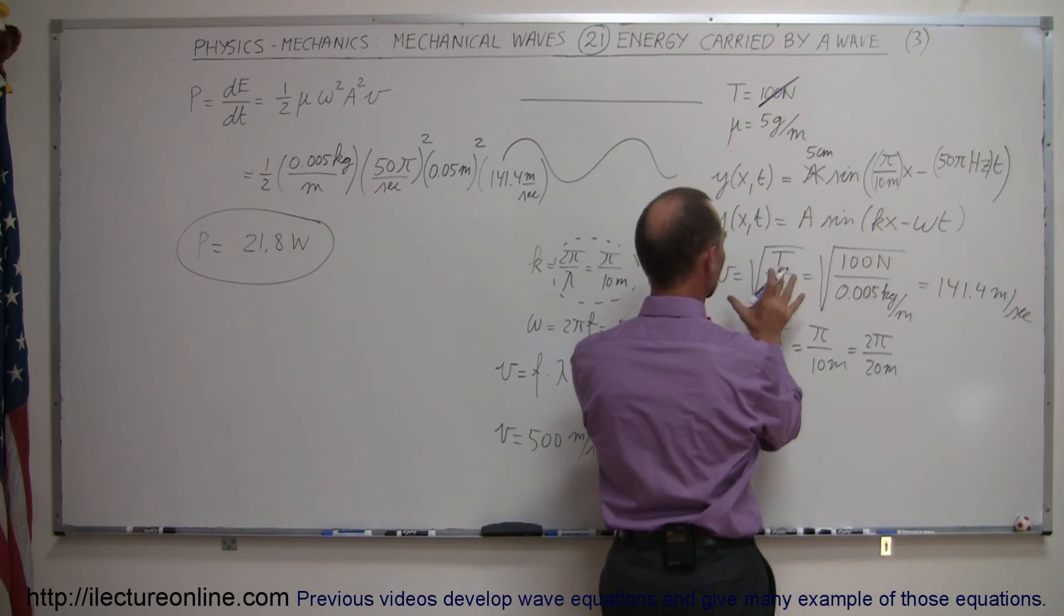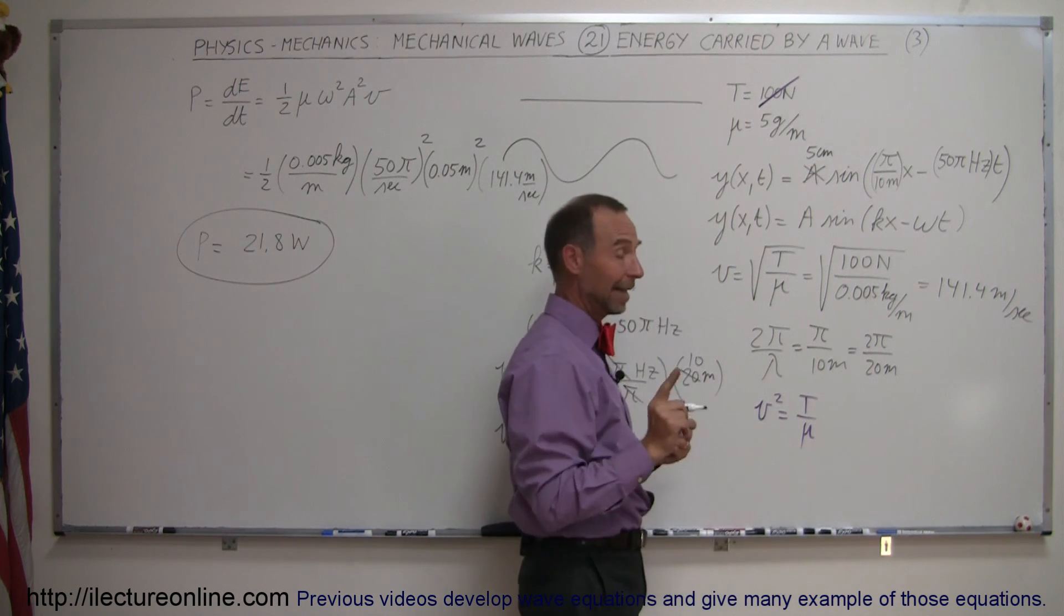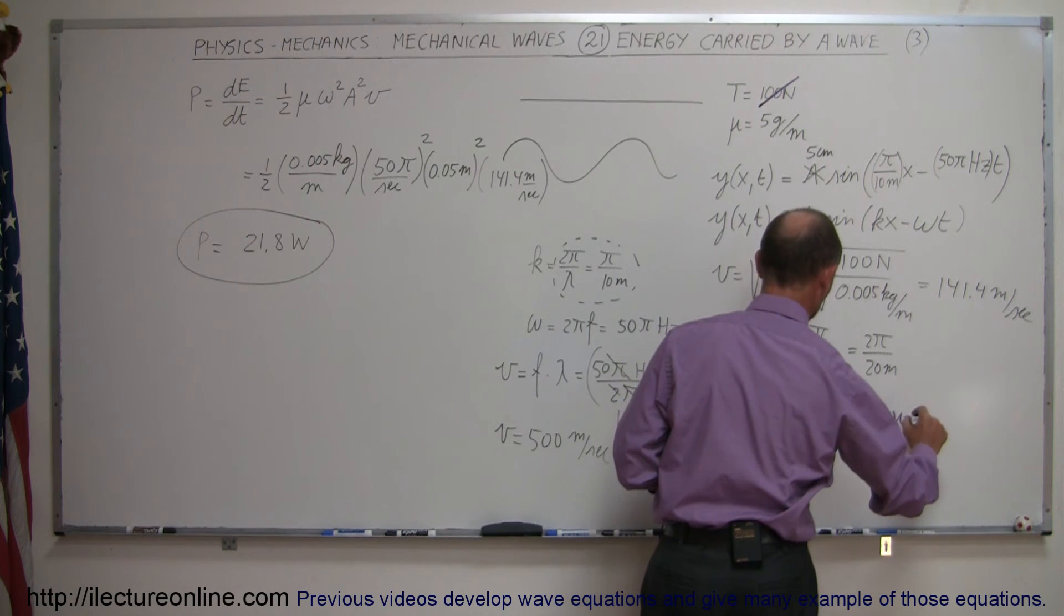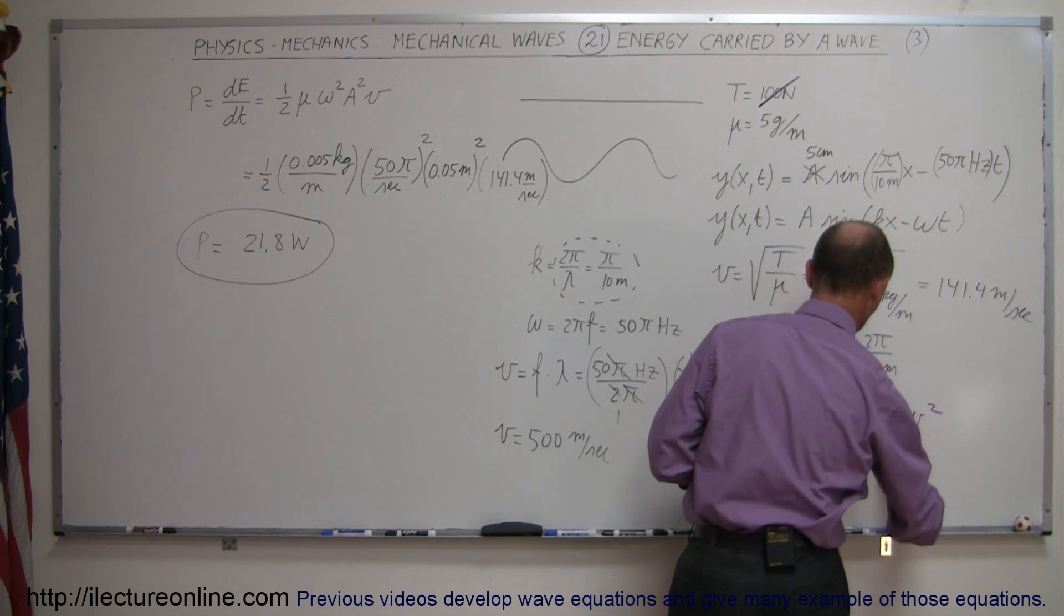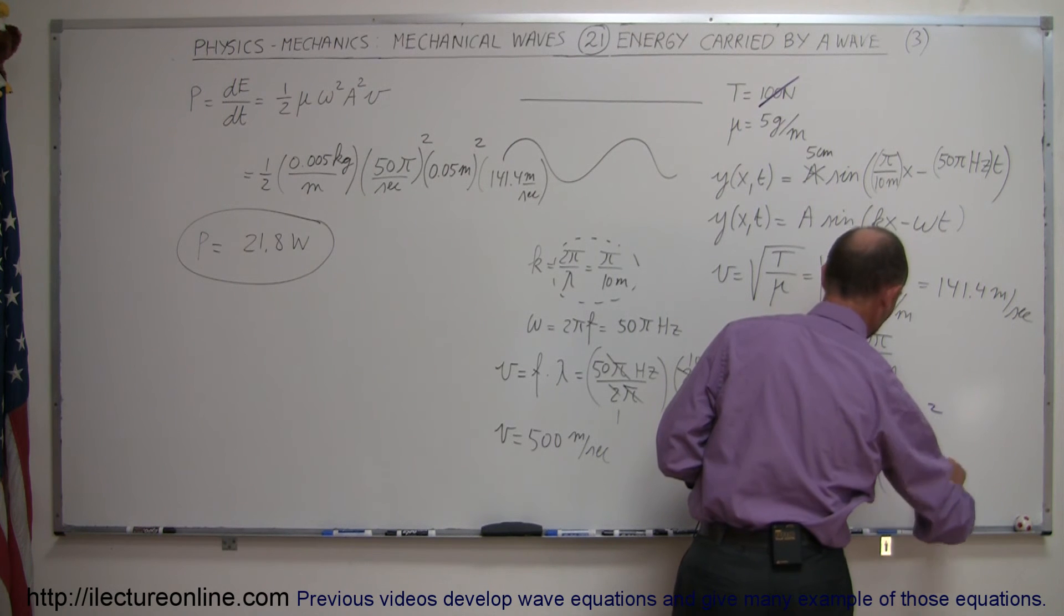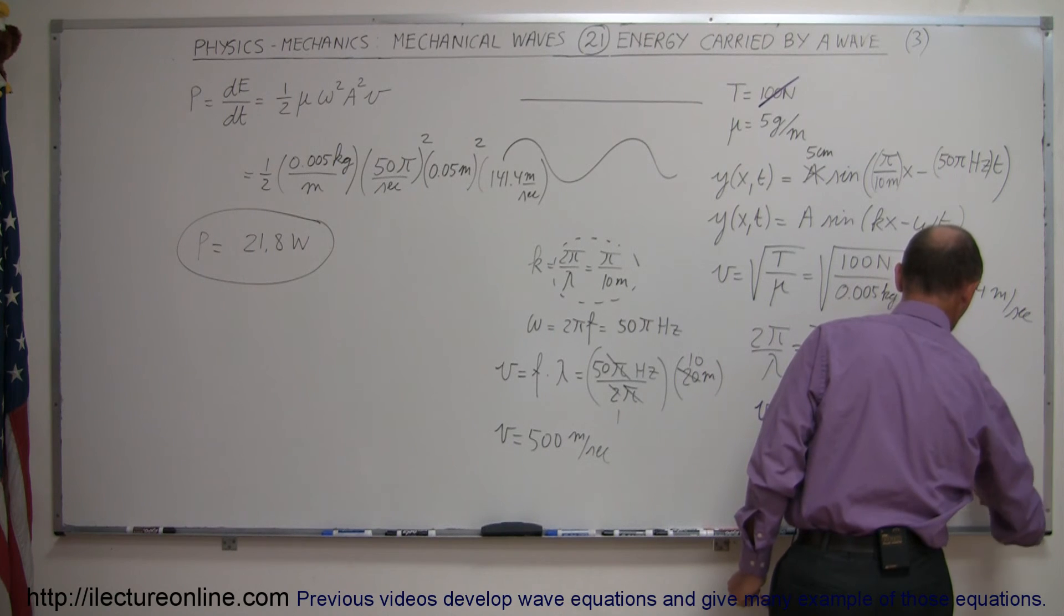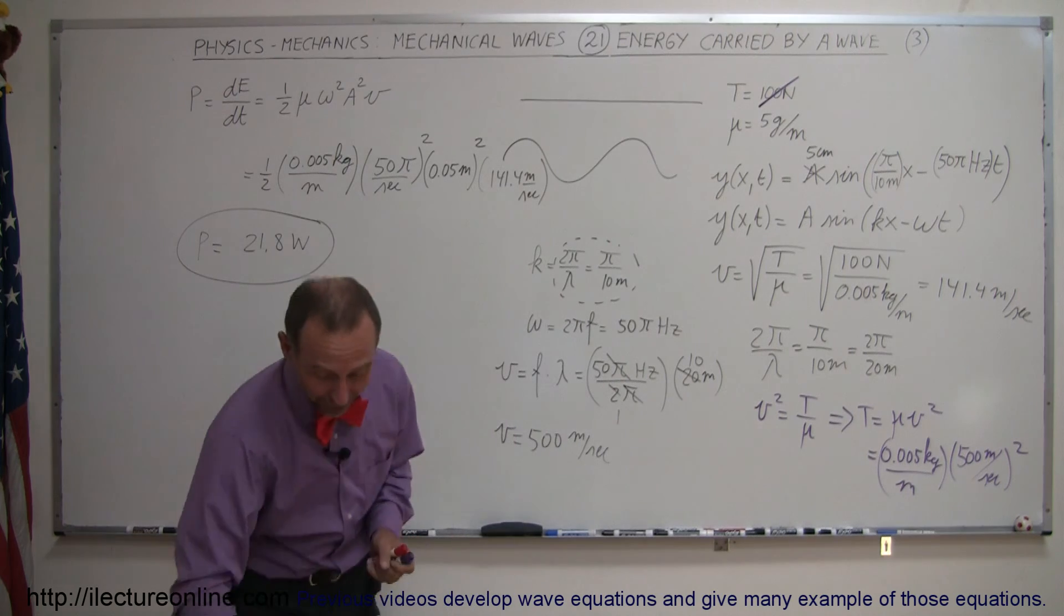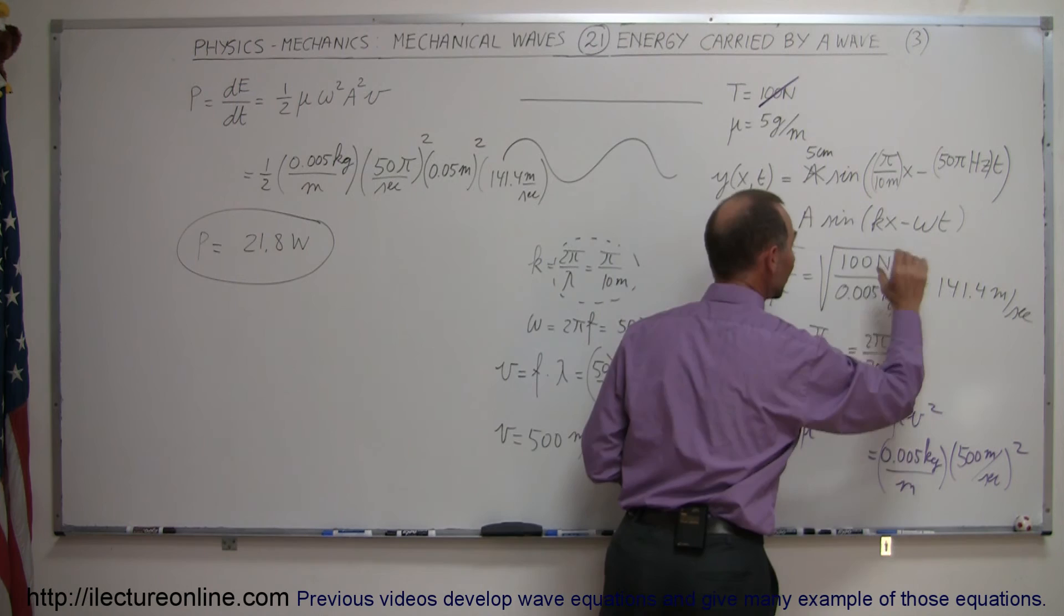So, what we can do is, we can square both sides, so we get velocity squared is equal to tension divided by mass per unit length. I can then say, well, that means that the tension is equal to mass per unit length times velocity squared, and so mass per unit length is 0.005 kilograms per meter, and multiply it times the velocity that I want, which is 500 meters per second, and I'm going to have to square that.